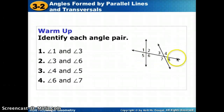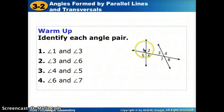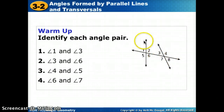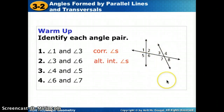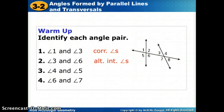We're going to look at this diagram and decide what kind of angle pairs each of these are. Angles 1 and 3 are both on the same side of the transversal and on the left side of the two lines, so those are corresponding angles — they're in matching positions. Angles 3 and 6 are on alternate sides of the transversal but inside the two lines, so those are alternate interior angles. Angles 4 and 5 are on alternate sides but outside the two lines, so those are alternate exterior.